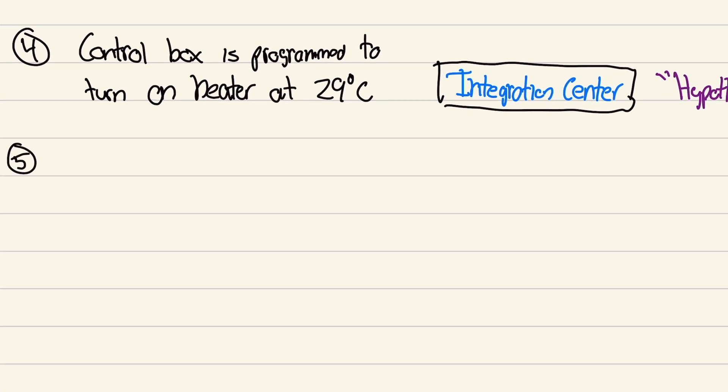Now from the hypothalamus or integration center, control box, whatever. The signal goes through a wire to a heater. It's called our output signal. Output signal.